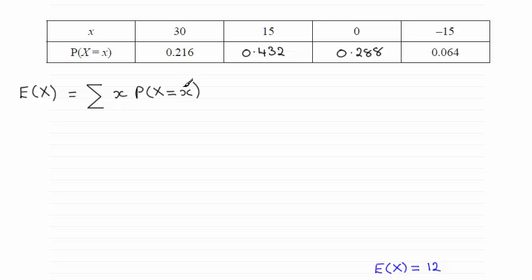So in order to do this, what we need to do is add up the observed value 30 times the probability 0.216, plus 15 times 0.432, and so on all the way through the table.